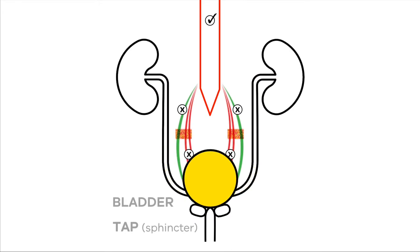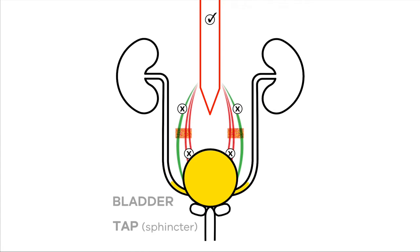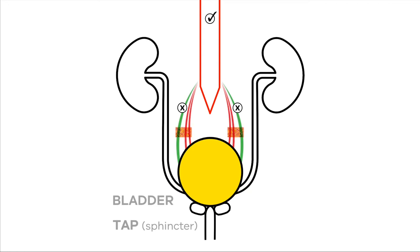The bladder is full, but doesn't try to empty because the automatic nerves are damaged. The bladder keeps filling until the tap can't hold back the urine anymore and it leaks out.